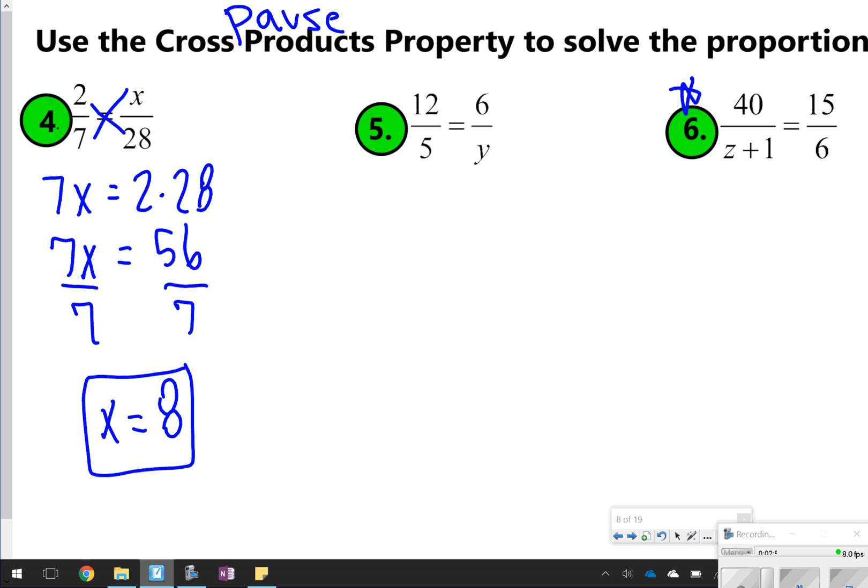For number 5, cross-multiplying here, 12 times y is equal to 5 times 6. 12 times y is 12y, and 5 times 6 is 30. Dividing both sides by 12, I believe you should get y is equal to 2.5.